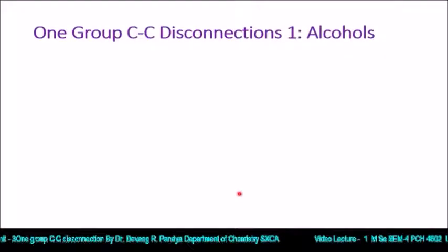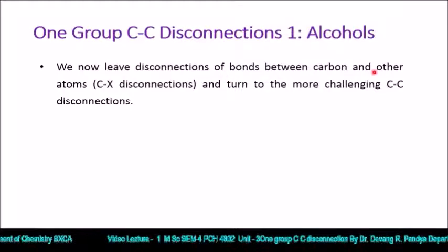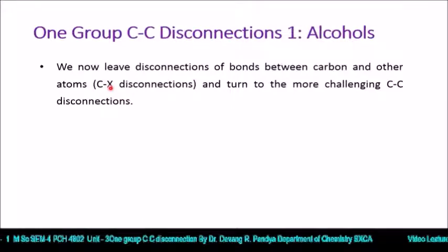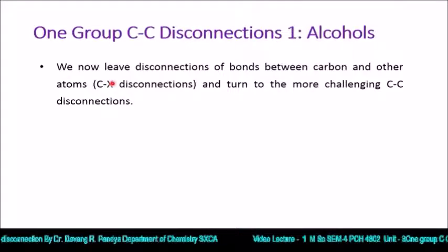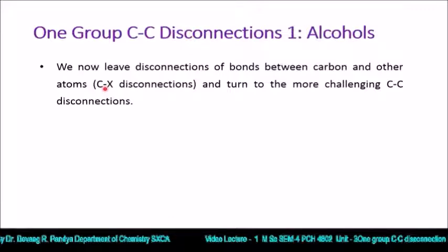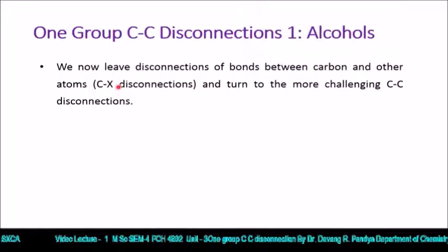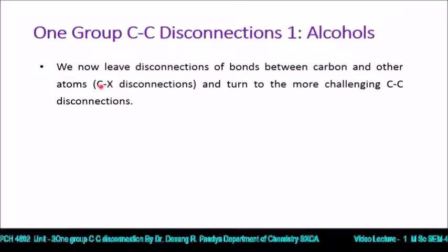Now we need to discuss one group CC disconnection, Part 1, for the synthesis of alcohol. We leave discussion of disconnections of bonds between carbon and other atoms studied in Unit 1 and Unit 2 — C-X disconnection, where X is any heteroatom like oxygen, nitrogen, sulfur, halogen, phosphorus, or any metal. C-X disconnection is a little easier because carbon has different electronegativity than other atoms like oxygen, nitrogen, sulfur, and halogens.